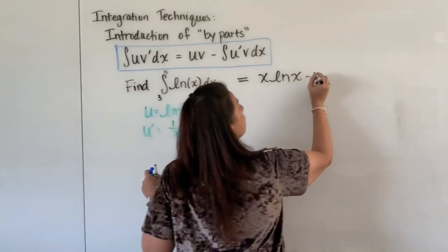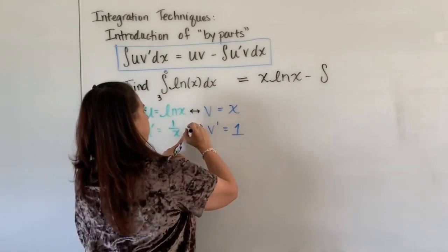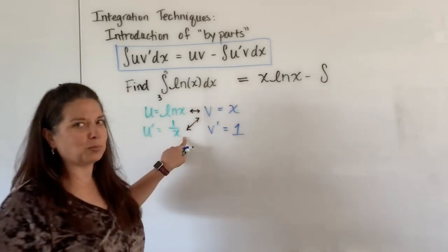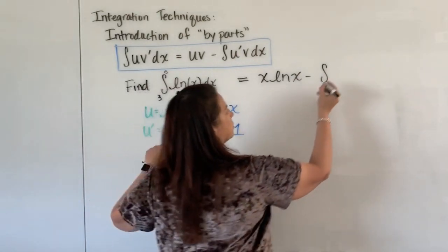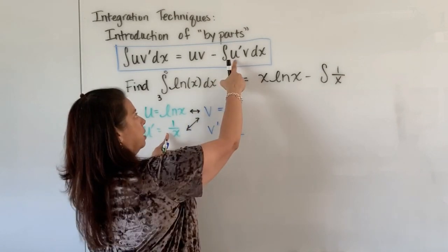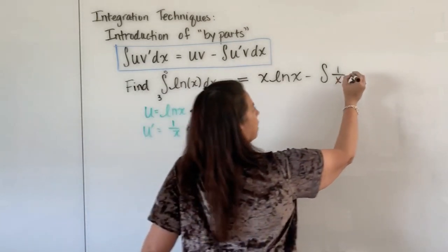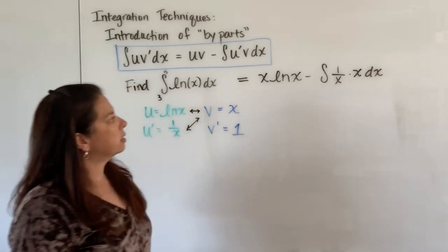Subtract off the integral of u prime times my v. So those two being multiplied together, check this out. When I take those two and multiply them together, I have 1 over x because that's my u prime times the v, the x. And of course I still have my dx that is still there.